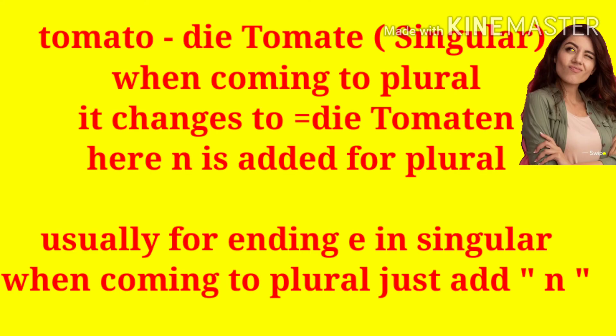Let me give one example: 'tomato' in English. In German, it is 'die Tomate.' The article used is 'die,' which is the feminine article, and this is the singular form.